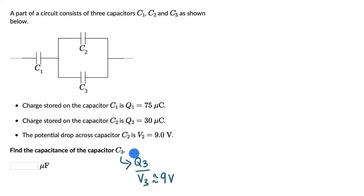All we need to do is figure out Q3. In order to figure out Q3, we can take a look at the setup. C1 is connected to C2 and C3. All the charge that will be accumulated on C2 and C3 should be related to the charge on C1.